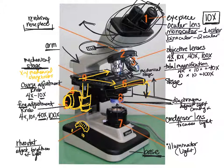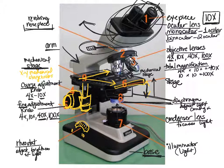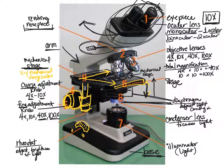Now let's discuss immersion oil. When light moves from glass to air to glass again, there are differences in refractive indices between the two media, and we lose some resolution. As we get to higher magnifications, we can lose more and more resolution. We get around these different refractive indices by using oil immersion. Our 100x lens is our oil immersion lens.